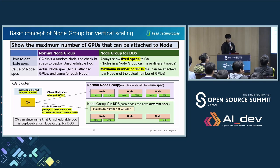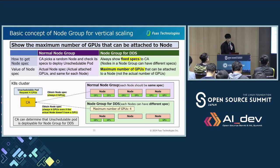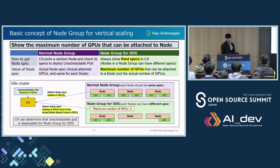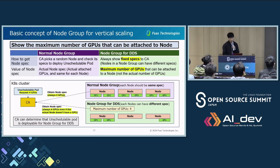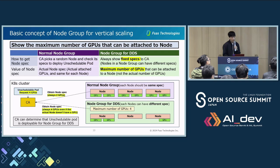For the node group for DDS, CA always obtains a fixed spec, meaning the actual node specs are irrelevant to CA processing. Specifically, the spec that CA obtains is the maximum number of GPUs that can be attached to the node. The reason for showing the maximum number is to cover cases where a user requests more GPUs than a node actually has. With current CA, if a number of GPUs greater than the actual number exists, CA cannot do anything because adding a node does not allow the pod to be deployed. In our solution, by showing the maximum number of GPUs that can be attached, CA can determine that the pod is deployable by adding nodes. So it does not matter if nodes in the node group for DDS have different specs.